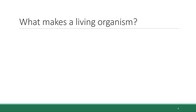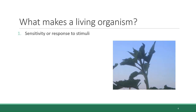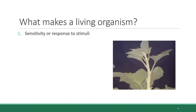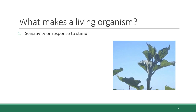Given that environmental science straddles the living and non-living worlds, it's important that we understand the difference between what is considered living and what is considered non-living. There are generally eight characteristics that, taken together, distinguish something as being alive. If you have all of these characteristics, you are a living thing, but if you are missing even one, you are not. The first characteristic is sensitivity or response to stimuli, meaning that organisms respond to signals in the environment, such as a sunflower tracking the movement of the sun.